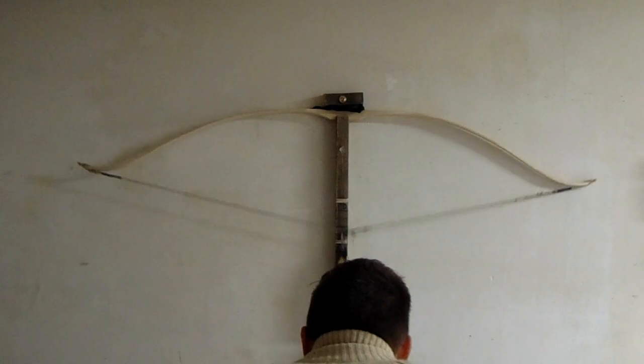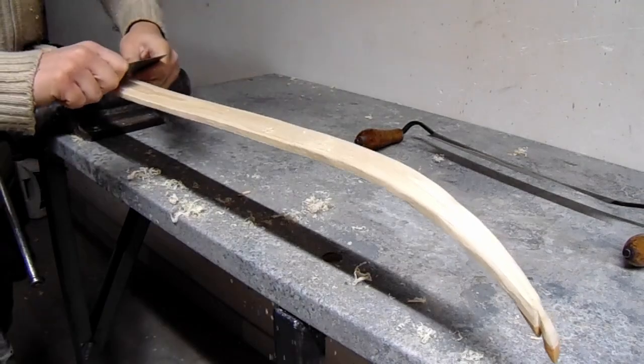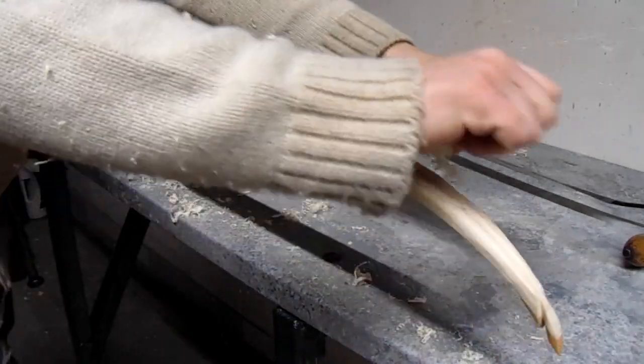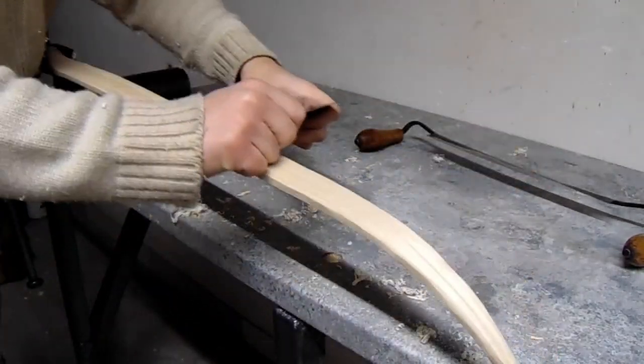If during the process any set is appearing, we should slow down and examine it. The spots that limbs are taking set are overstressed. We should put more work on remaining limb sections to balance it.